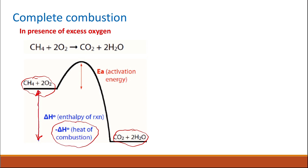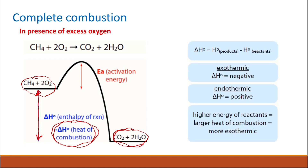This difference is called the heat of combustion. The higher the energy of the reactant, or the higher the energy of the hydrocarbon, the higher the heat of combustion. Because the products at the end are carbon dioxide and water, the difference in energy between the reactants and the products — the enthalpy of the reaction — carries a negative sign, because the energy of the reactants is higher than the energy of the products.